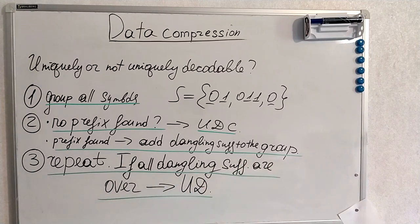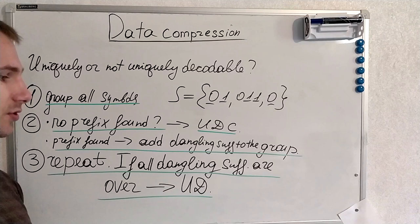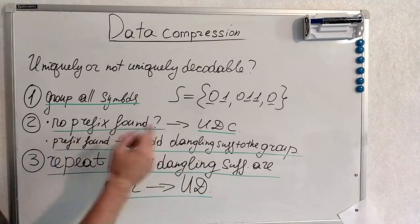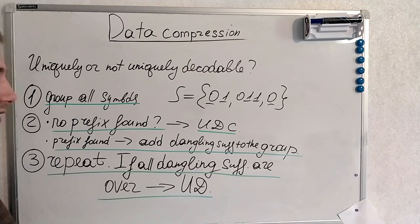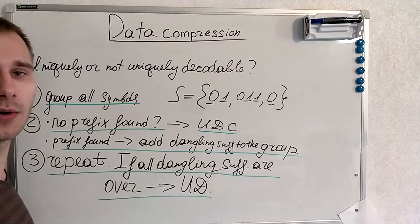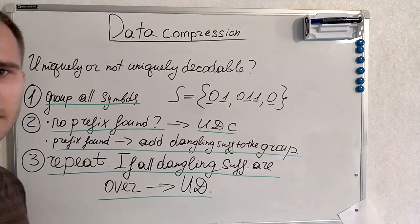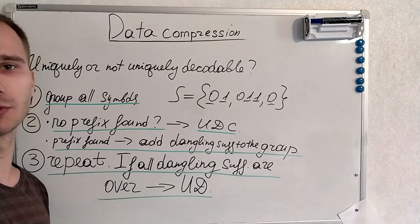If all dangling suffixes are over, this will automatically mean that our code is uniquely decodable. And of course if some prefix on the next or following iteration is found, it means that our code is not uniquely decodable. I will now give an example and this will become super clear.